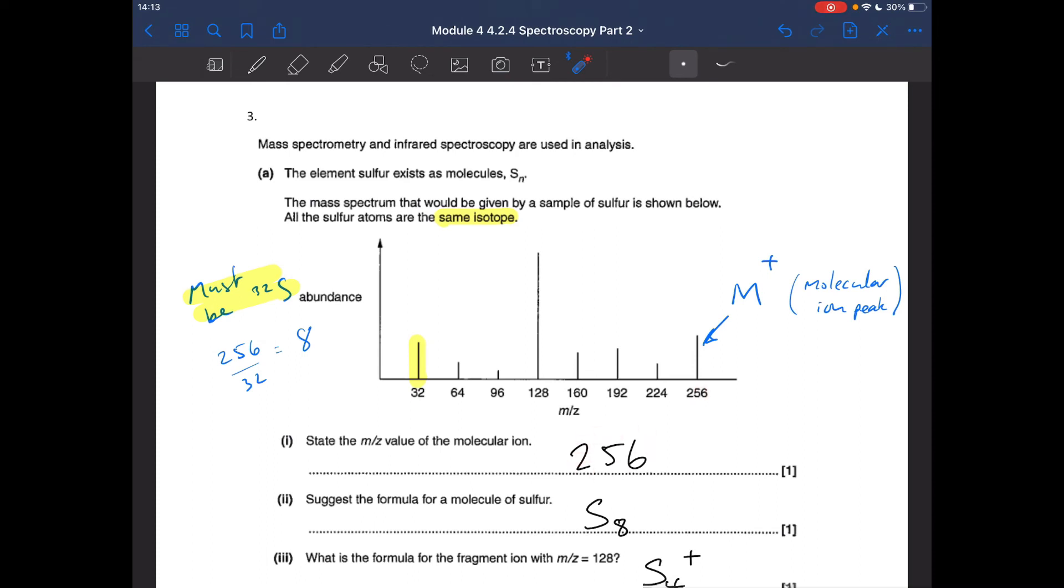So you do need to know the significance of the molecular ion peak, which one it is. So it's 256. The formula for the molecule of sulphur. So we were told that all of the sulphur atoms are the same isotope. So you can see from that very first peak there, the M/Z 32, that must be the isotope when it by itself, you can see that it must be isotope 32. So it's S-32 we're dealing with. So what would be the formula of this molecule of sulphur? Well, the whole molecule weighs 256. The single isotope is 32. 32 goes into 256, 8 times, so it's S8.